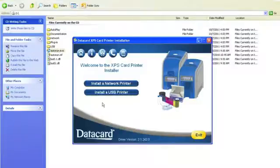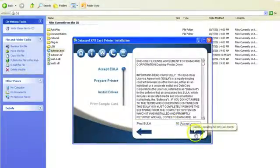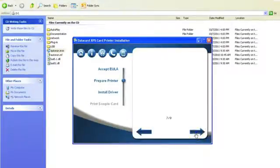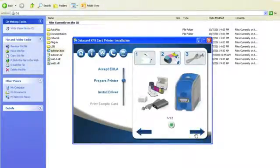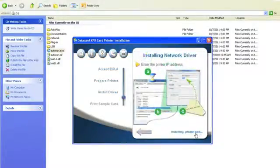After the printer is in the ready state, go to your PC and select installing network printer. On the EULA screen, select the accept and select the right arrow. After ensuring the prep steps are completed, click Next and wait a few minutes as the network driver installs.